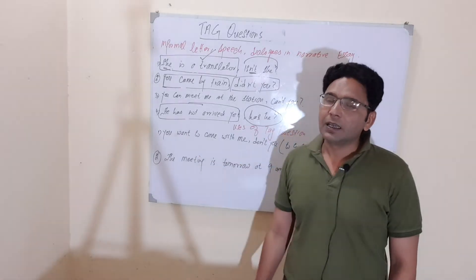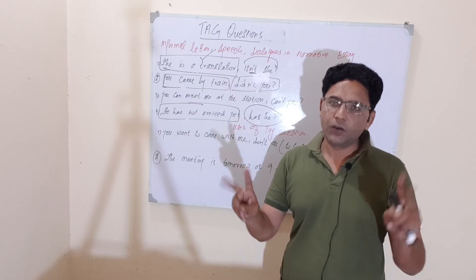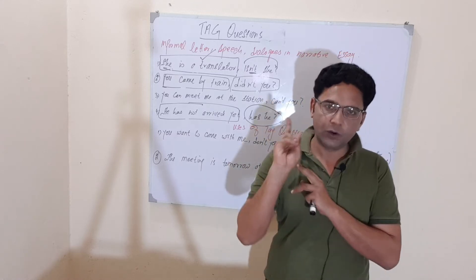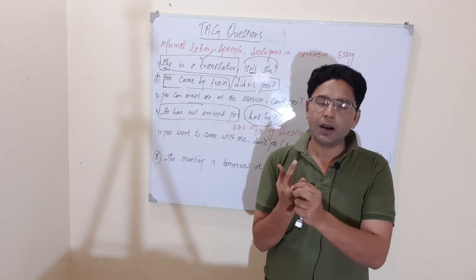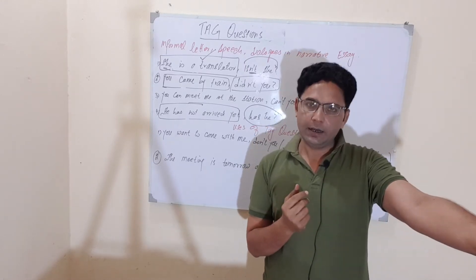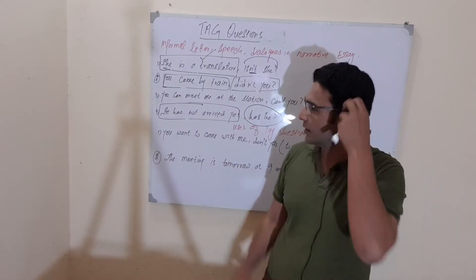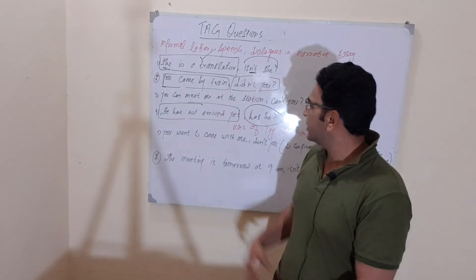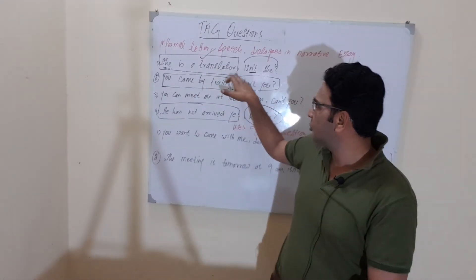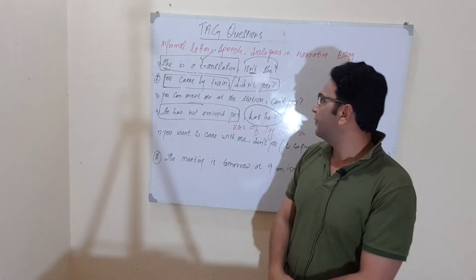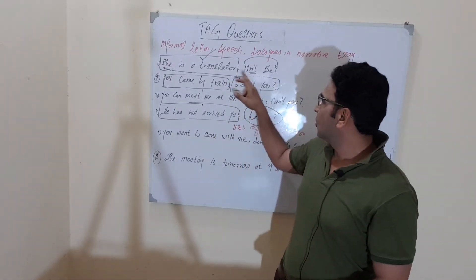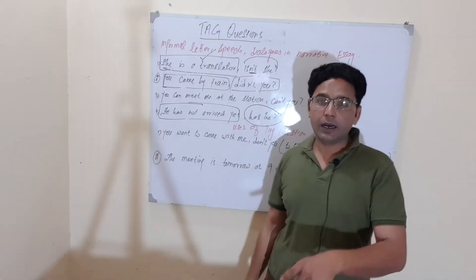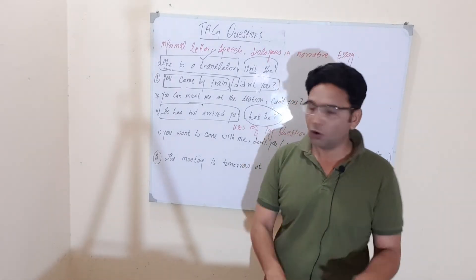The second thing is that a tag question consists of two parts. The second part obeys what happens in the first part. Suppose 'she is a translator' — this is a positive sentence in simple present tense. Its tag question would follow the first part with a comma, then 'isn't she?' So if it's an affirmative sentence, its tag question must be negative interrogative.